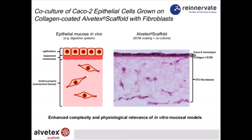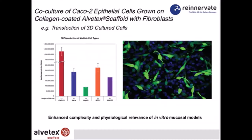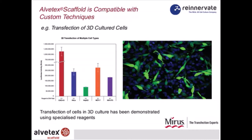Co-culturing fibroblasts in Alvitex with collagen coating and CACO2 cells on the surface creates a much more physiologically relevant situation compared to a single layer of cells on a PET membrane. There's good evidence of signaling events between the epithelium and underlying fibroblasts to control cell proliferation and differentiation. Regarding transfection in 3D culture, we've partnered with a company called Mirus in the U.S. who have developed a reagent enabling transfection of cells in 3D culture — demonstrated here with GFP-expressing cells and luciferase activity plots in various cell lines.